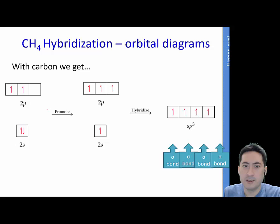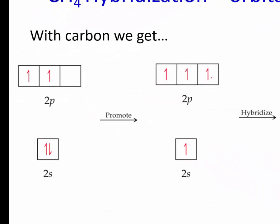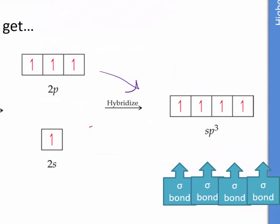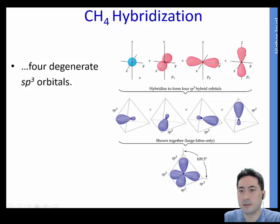CH4 again. That one. Promotion. Make sure you draw the box in between there. Four sp3s. Ready to form sigma bonds. And that's what it will look like.